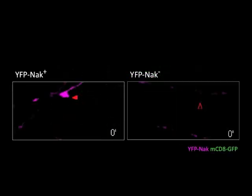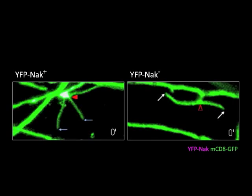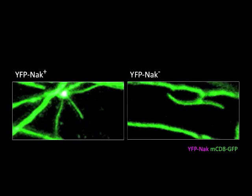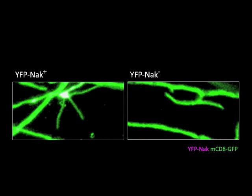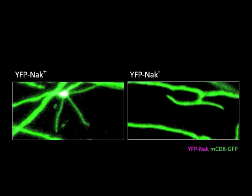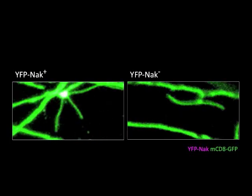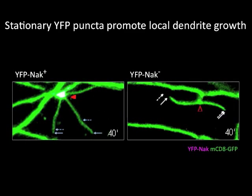Furthermore, we examined terminal dendrites with or without YFP-Nak puncta at the basal branch side. The YFP-Nak positive branches were highly dynamic and eventually led to a dendrite length increase. However, the YFP-Nak negative branches retracted more frequently and ended up with a length decrease. This data shows that the local presence of YFP-Nak puncta at the basal branch side appeared to modulate the dynamics of nearby terminal branches, resulting in dendrite growth.